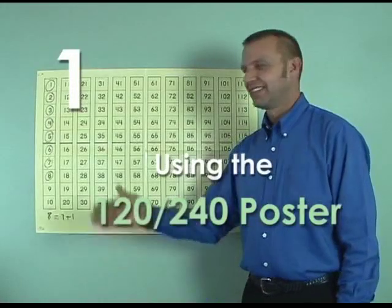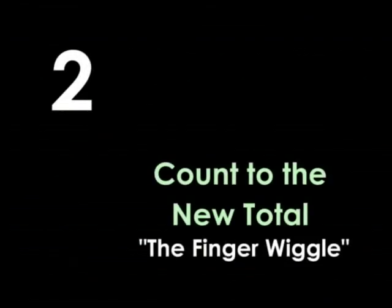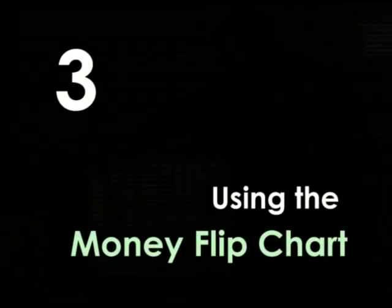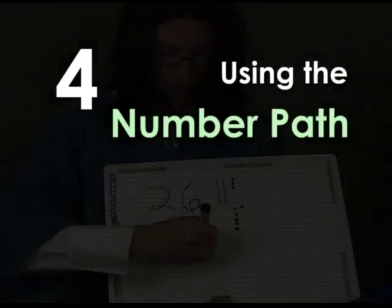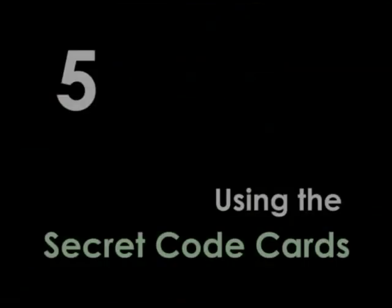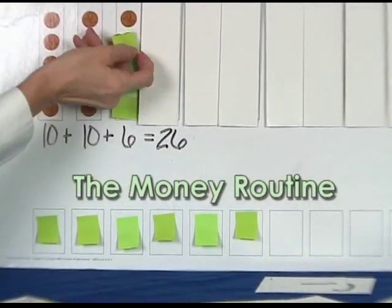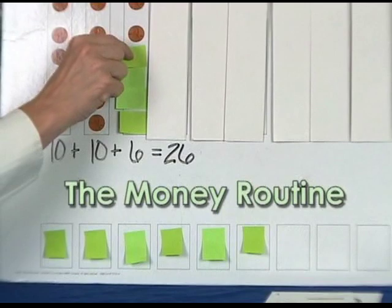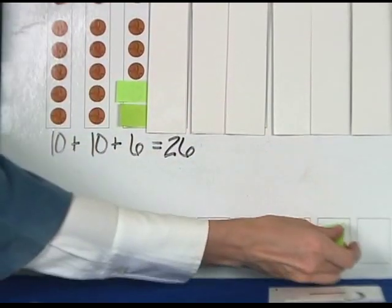Using the 120-240 poster, count to the new total; using the money flip chart; using the number path; using the secret code cards. The money routine reinforces fundamental money and multi-digit number concepts. It provides visual practice with these concepts that are built incrementally from day to day.